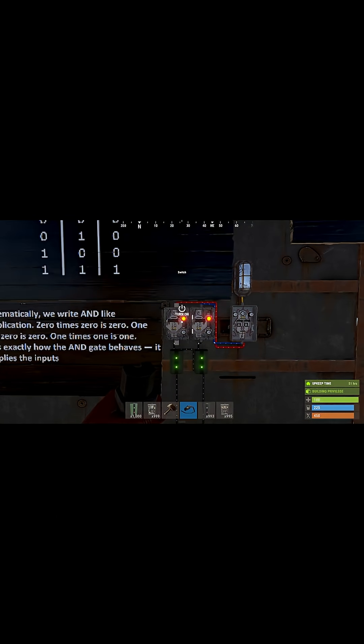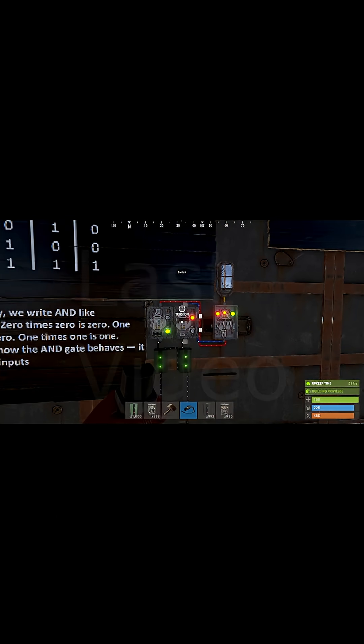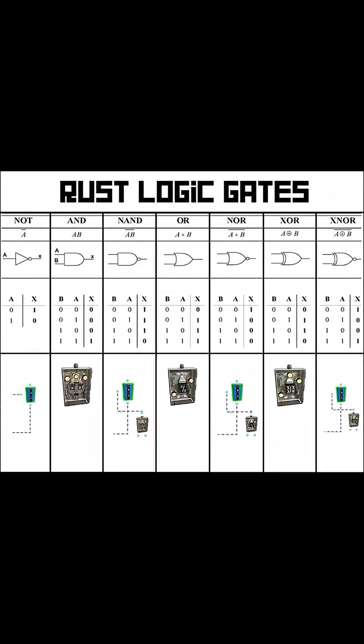So far, we covered the AND gate and the OR gate. Next, we'll cover the NOT gate, and then we will finally have a functionally complete set that we can use to build many more gates.